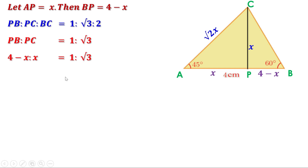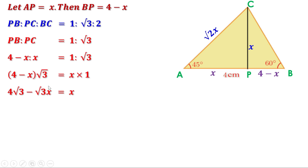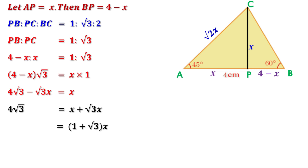From the proportion, (4 − X) × √3 = X × 1. Expanding: 4√3 − √3X = X. Taking −√3X to the other side: 4√3 = X + √3X. Factoring out X: 4√3 = X(1 + √3). To find X, divide both sides by (1 + √3): X = 4√3 / (1 + √3). So the height PC to side AB is 4√3/(1 + √3) centimeters.